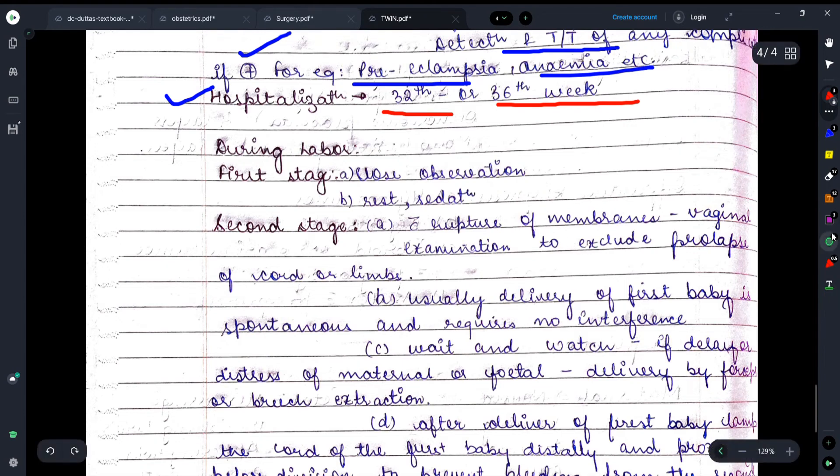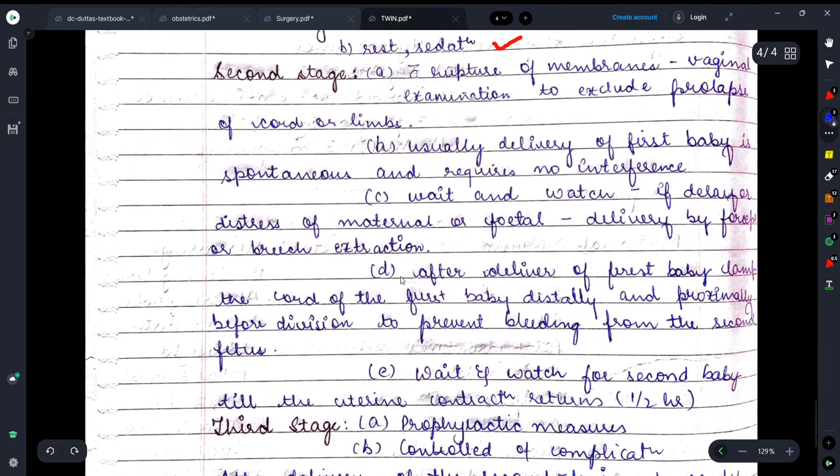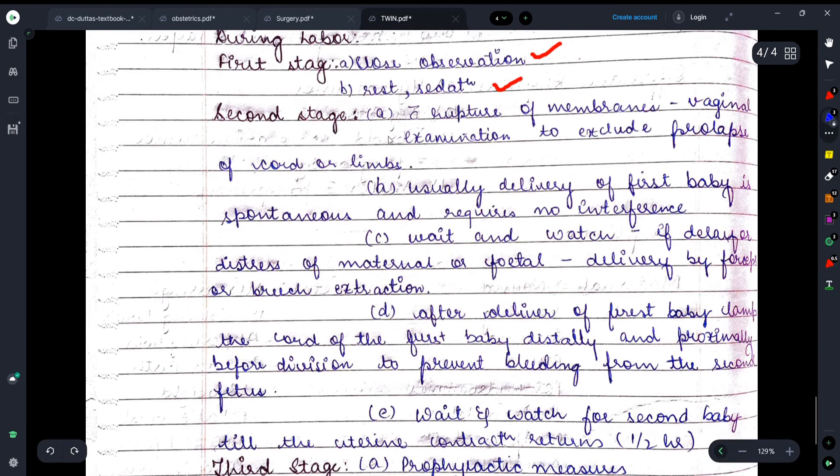Moving on, during labor - what management do we have to do during labor? Here it's mentioned that if it's the first stage of labor, we have to do close observation. We prescribe rest and sedatives to the female. Moving on, talking about the second stage of labor - examination to exclude prolapse of the cord or limbs. As soon as membrane rupture occurs, we have to take care that cord prolapse doesn't happen, which we just read as a complication.